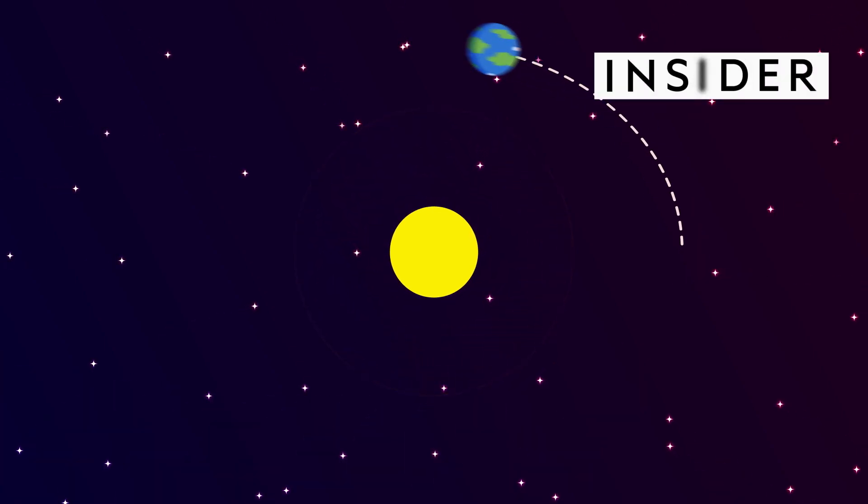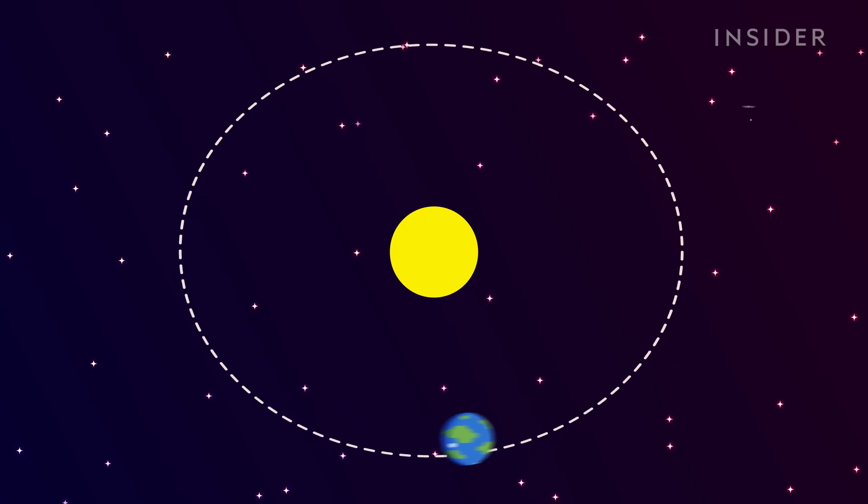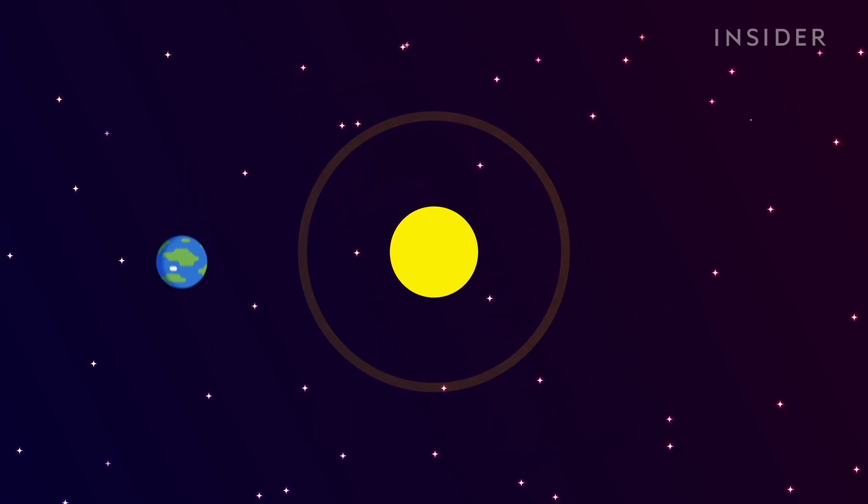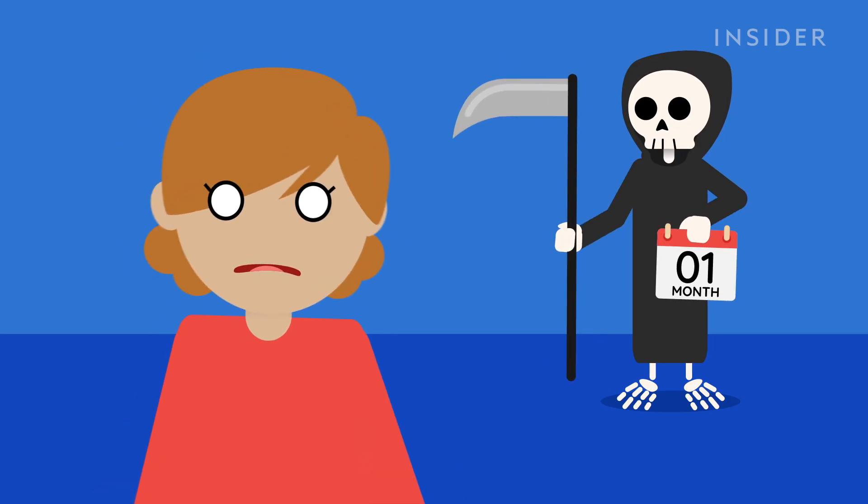Earth zooms around the sun at 110,000 kilometers per hour. But what if it just stopped? Well, for one thing, you'd have only a month to live.